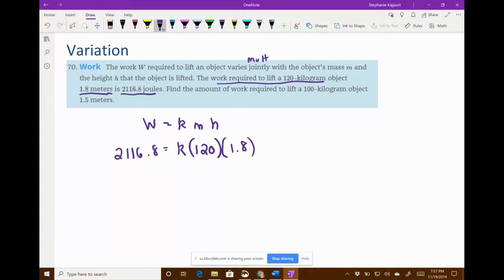So you plug in the numbers that you get from your second equation or the second sentence. And then you need to solve that for K because we can't get an equation until we know what that constant is. So that means I have to multiply 120 by 1.8. So my calculator says that's 216.